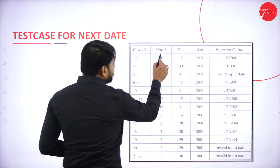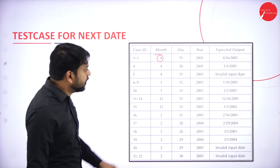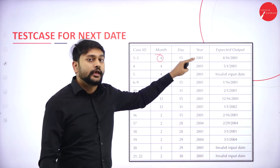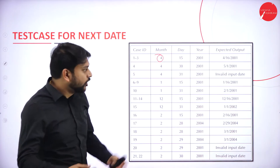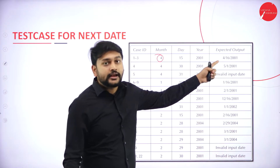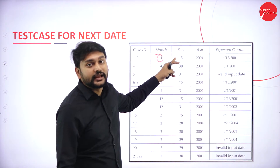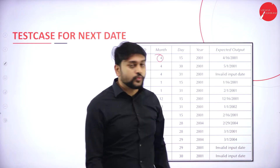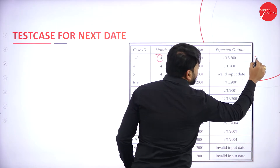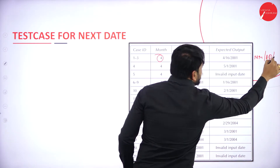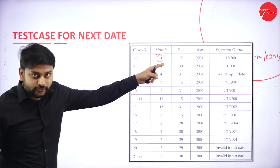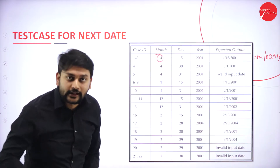For test case IDs 1, 2, and 3: suppose I enter month = 4, day = 15, and year = 2001. What should be the next date? Obviously, the month stays as 4, the day increments to 16, and the year remains 2001. The date is in MM/DD/YYYY format.